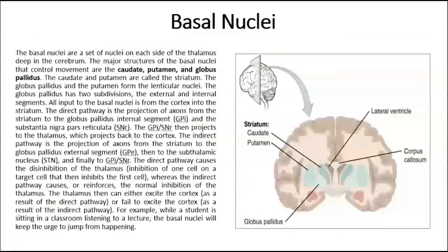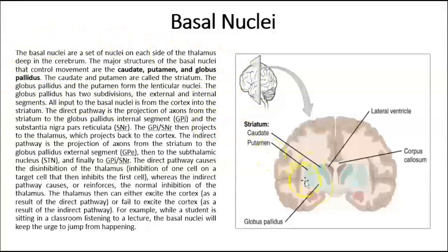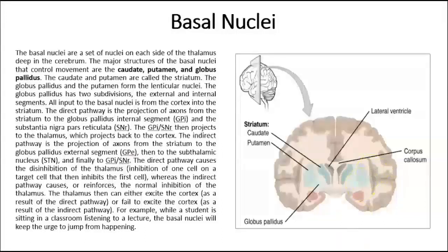The basal nuclei are a set of neurons located on each side of the thalamus. These basal nuclei are involved in motor control.